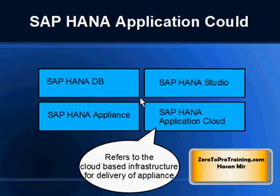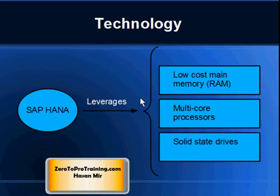For more details on the cloud infrastructure, you can take my other videos. For now, understand that SAP HANA is also available as a service on the cloud infrastructure that clients can use on a need basis. SAP HANA is very fast compared to traditional databases. The performance comes from leveraging available technologies: low-cost main memory (RAM — Random Access Memory), multicore processors, and solid state drives.